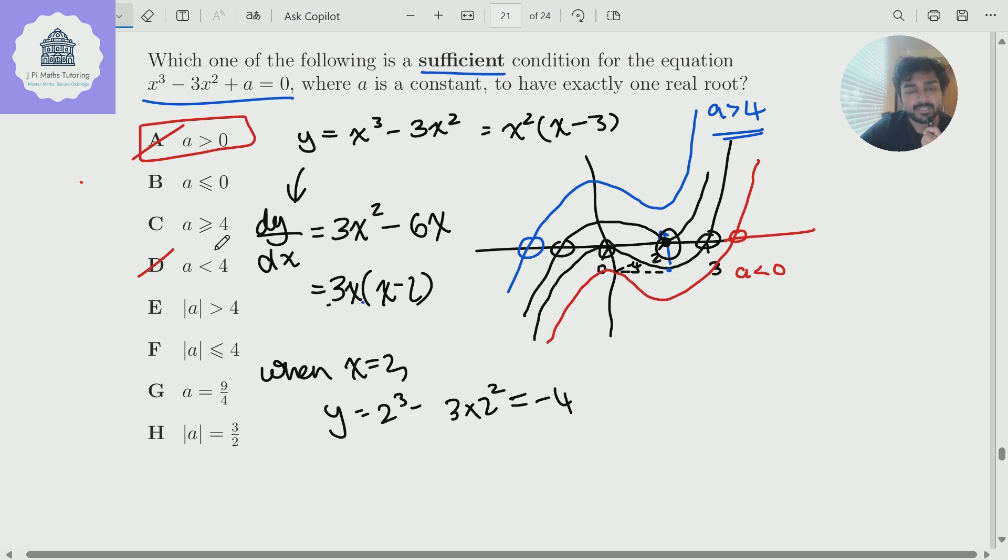I can also eliminate F. So if the modulus of A is less than or equal to four was a correct option, then that would mean that both G and H would be correct as well. So if whenever the modulus of A is less than or equal to four made this equation have only one real solution, then that means in particular, when A equals nine over four, this equation would have one real solution. So I can eliminate F because of that.